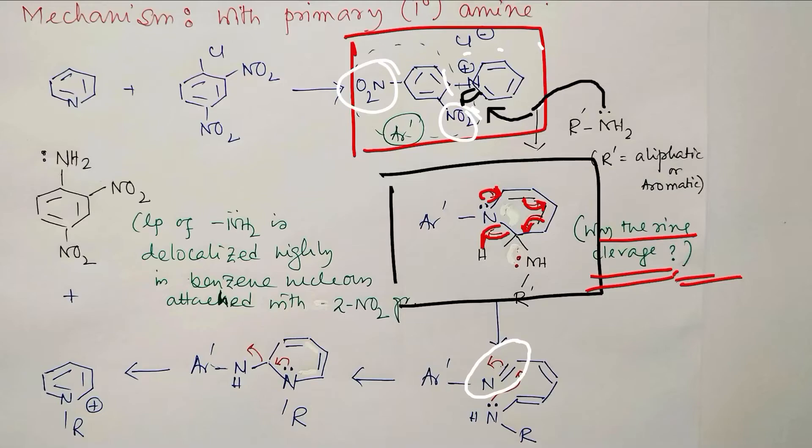So if imine forms, then these nitrogen lone pair can attack here. And if it attacks, it opens up. So again, six-member ring forms. This is one, two, three, four, five, six. So this is the six-member ring attached to this nitrogen. And in the second step what is possible? That these nitrogen can again push the lone pair and it can eliminate.